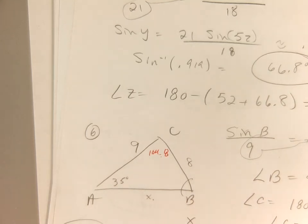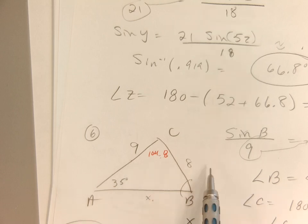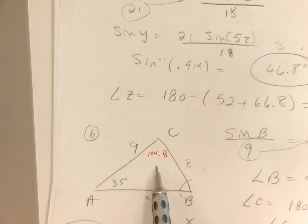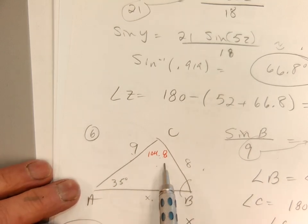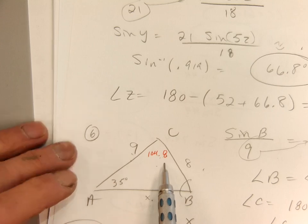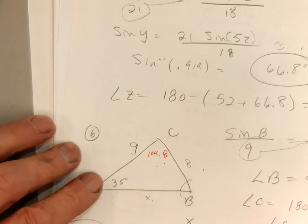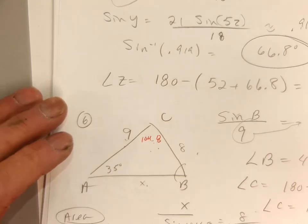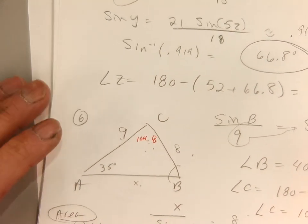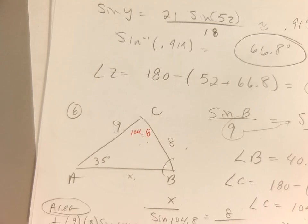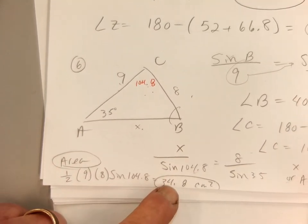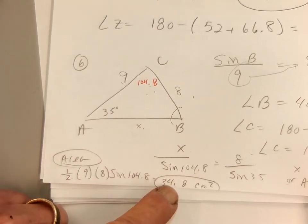Finally, area is 1 half times adjacent times adjacent times the sine of the angle — 1 half times adjacent times the sine of 104. I could have used any of the angles, but I chose that one. I wound up with about 34.8 centimeters squared.